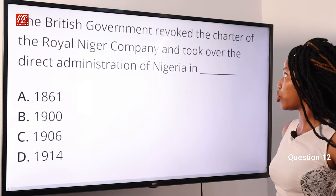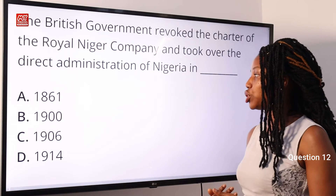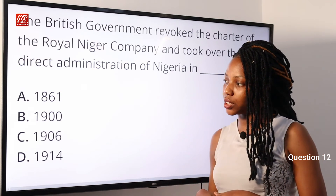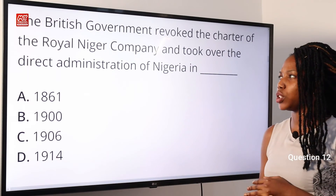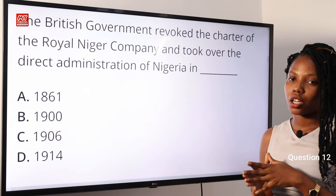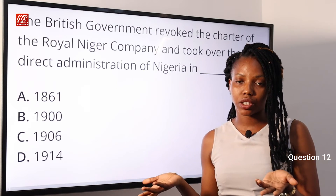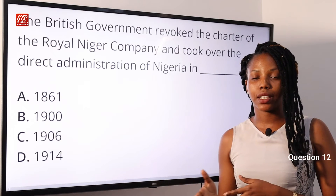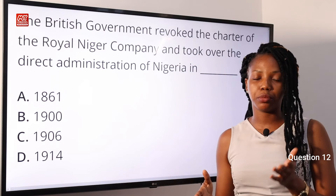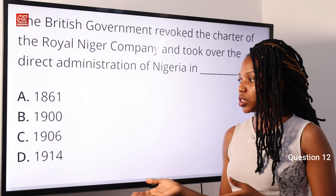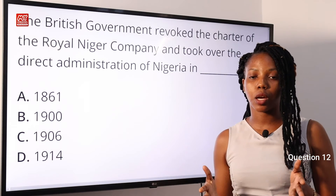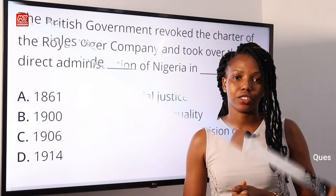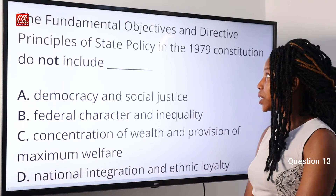Question 12: The British government revoked the charter of the Royal Niger Company and took over direct administration of Nigeria in — the answer is 1900. That year also saw the creation of the Southern Protectorate and the Northern Protectorate. In 1906, Lagos Colony was added and renamed the Southern Nigerian Protectorate. In 1914, the Northern and Southern Protectorates were amalgamated to form Nigeria. Option B — 1900 — is the correct answer.